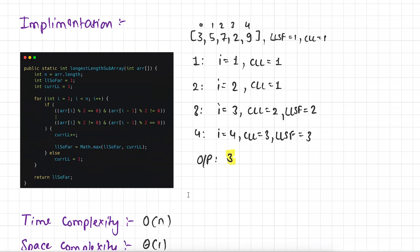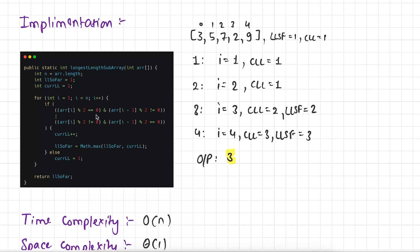Let's see the implementation of this approach. Here we have a function longest_length_subarray which takes an array as input. We initialize two variables: longest_length_so_far to 1 and current_longest_length to 1. We run a single loop from 1 till less than n. In this loop we check if the current element is even then the previous element should be odd, or if the current element is odd then the previous element should be even. If satisfied we increment current_longest_length by 1 and update longest_length_so_far based on the maximum of both values. If not satisfied we reset current_longest_length to 1. Finally we return longest_length_so_far.